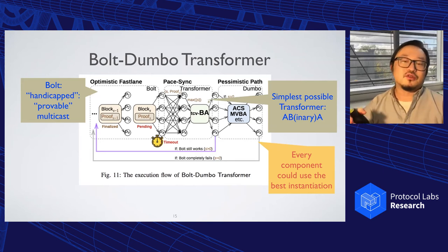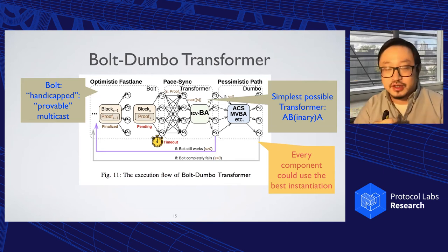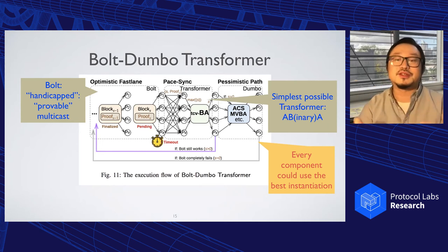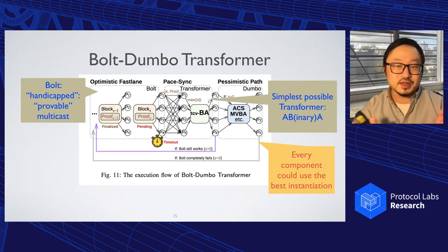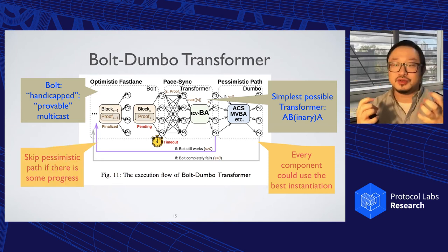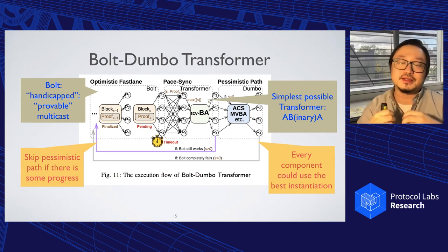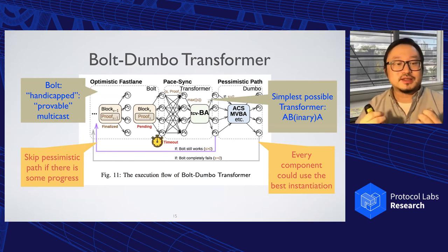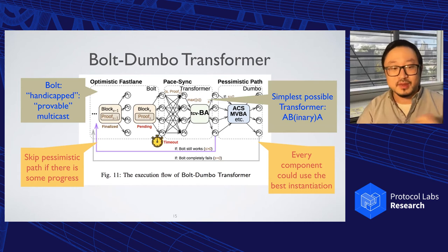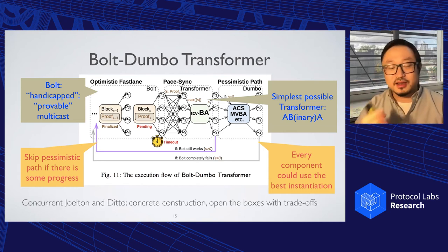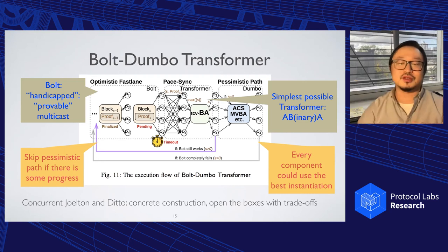Since it is a generic framework, there are a bunch of benefits. First of all, we can use the best instantiation for every component — for example, we immediately inherit the nice property of linear communication per transaction. And even though our pessimistic path is called DUMBO, we don't have to use DUMBO; we might even use a better version like DUMBO-NG or Speeding DUMBO. Since the protocol is highly modular, we can also easily minimize the use of the pessimistic path — we only use the pessimistic path until we have to. Whenever we see any progress in pace synchronization, we directly skip the pessimistic path and switch back to the fast lane. Interestingly, there is a concurrent work — I think they are presenting in one or two minutes — they have a concrete construction, so we can share different types of trade-offs.